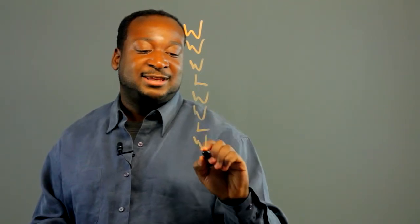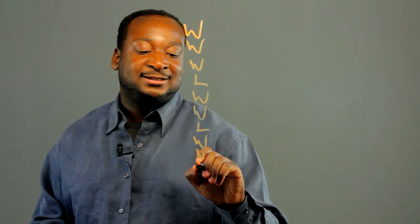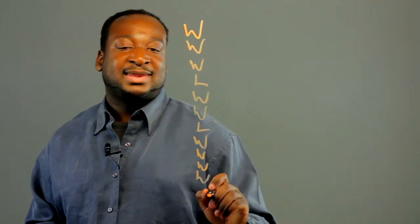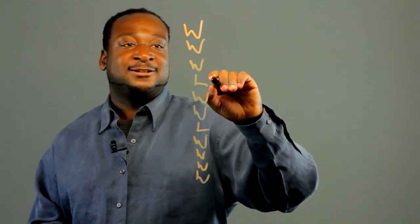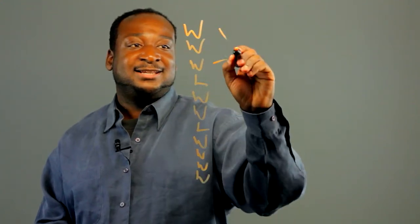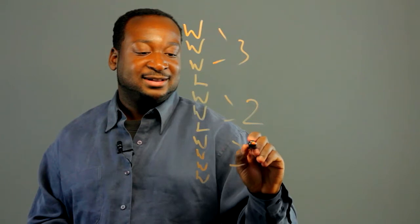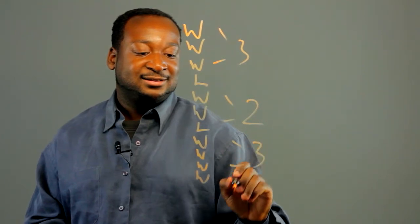There's the W standing for wins and the L standing for losses. Now over time, we could look at the number of wins before a loss — in this case, 3, 2, 3.